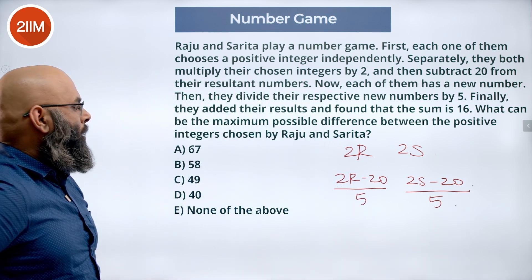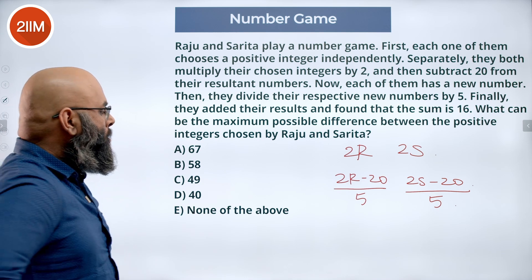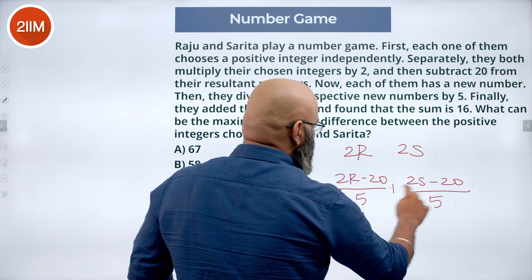Finally, they add the results and found their sum is 16. So that means they are adding both of these numbers and they get 16.